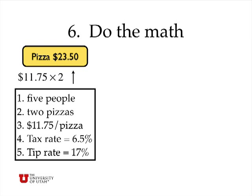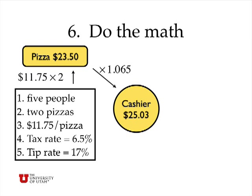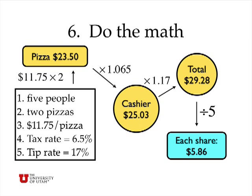So now we have to do the math. So we take $11.75 times 2, that means the pizza is going to cost $23.50. Then I calculate with the tax that the total that I owe the cashier is $25.03. Then I calculate with the tip, that's going to come to $29.28. And finally when I divide by 5, each share of this meal is going to be $5.86 if we split it evenly.